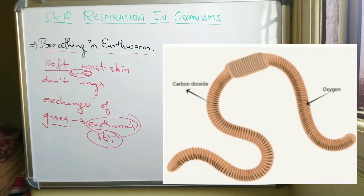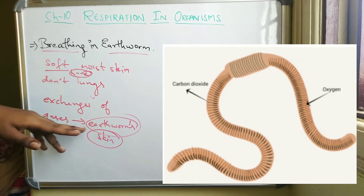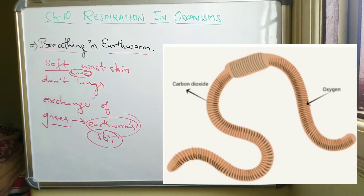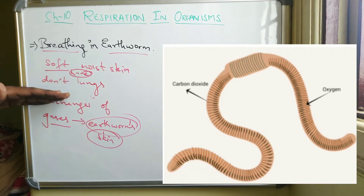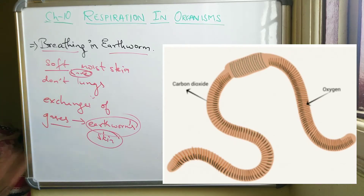They don't have lungs, but that doesn't mean they don't breathe. The exchange of gases — oxygen and carbon dioxide — happens through the earthworm's skin. Even for the frog, the same thing happens. They also have moist skin, so gas exchange still happens through the skin as well.